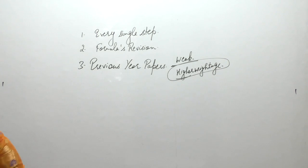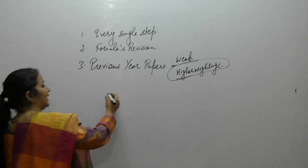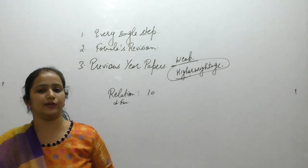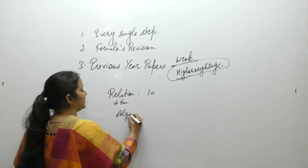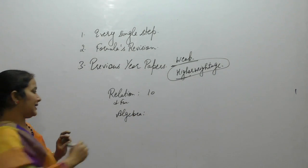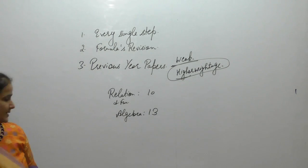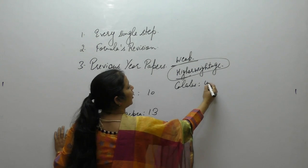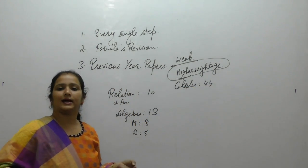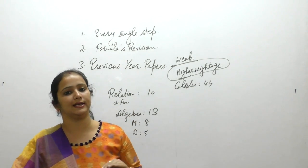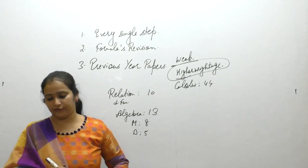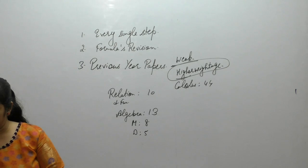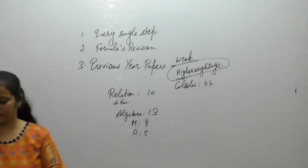Regarding weightage: Relations and Functions (chapters 1 and 2, including Inverse Trigonometric Functions) — 10 marks. Algebra: Matrices and Determinants — 13 marks total (Matrices 8 marks, Determinants 5 marks). Calculus is the maximum at 44 marks — covering Continuity and Differentiability (8 marks), Application of Derivatives (10 marks), Integration (12 marks), Application of Integration (6 marks), and Differential Equations (8 marks).